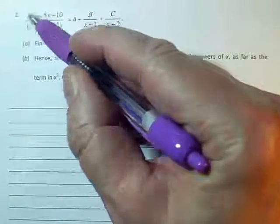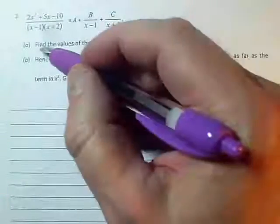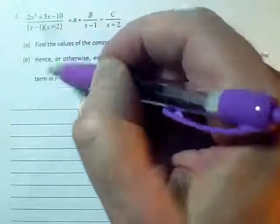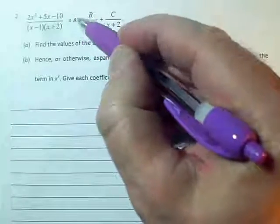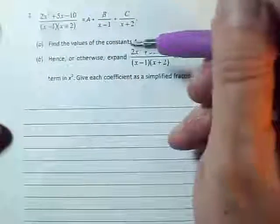Because we've got x squareds on the top and x squareds on the bottom, it's possible to do an algebraic division first to find out this constant a and a remainder and then just do the partial fractions on the remainder.